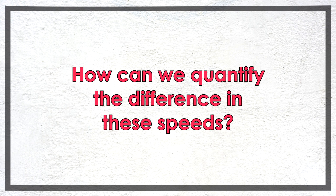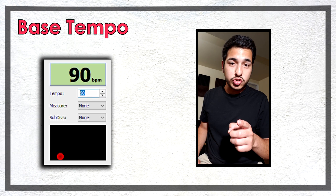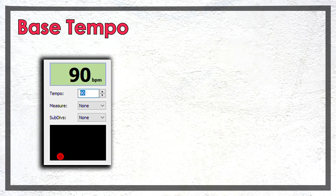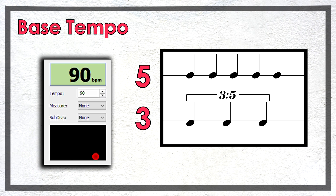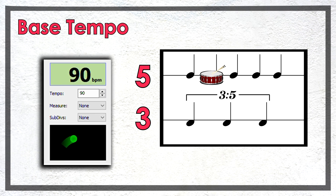Now, how can we quantify the difference in these speeds? First, we have to set a base tempo or control speed. Since we're using a metronome, as every musician should, we're going to use this tempo as our base tempo, and we're also going to play one side of our polyrhythm along with the metronome. So let's say we play the five side along with the metronome at 90 beats per minute. This means that the three side would sound slower in relation to the five side.